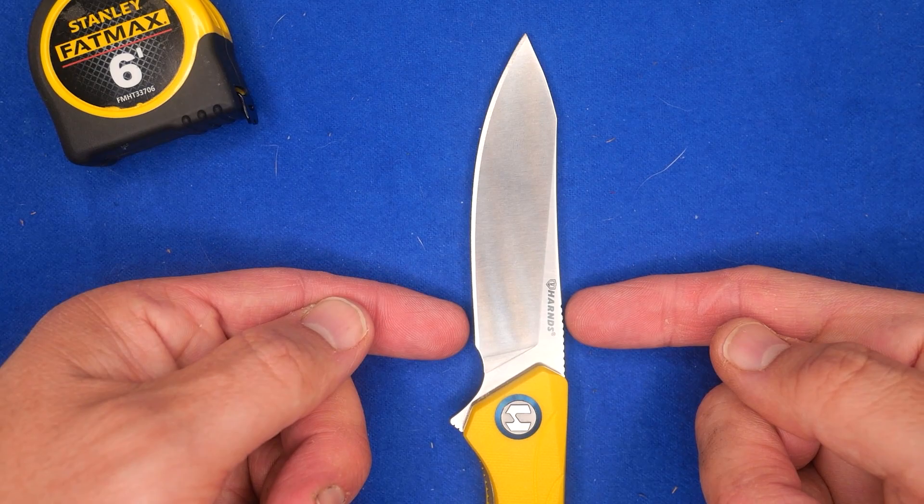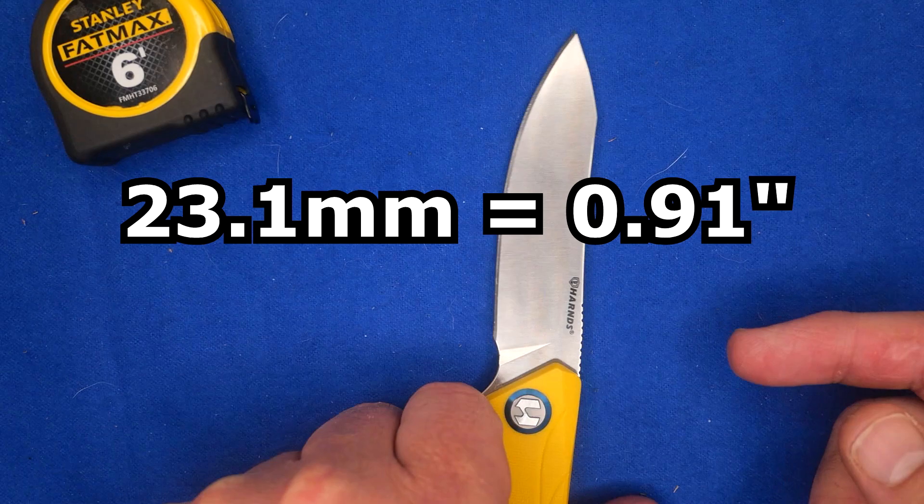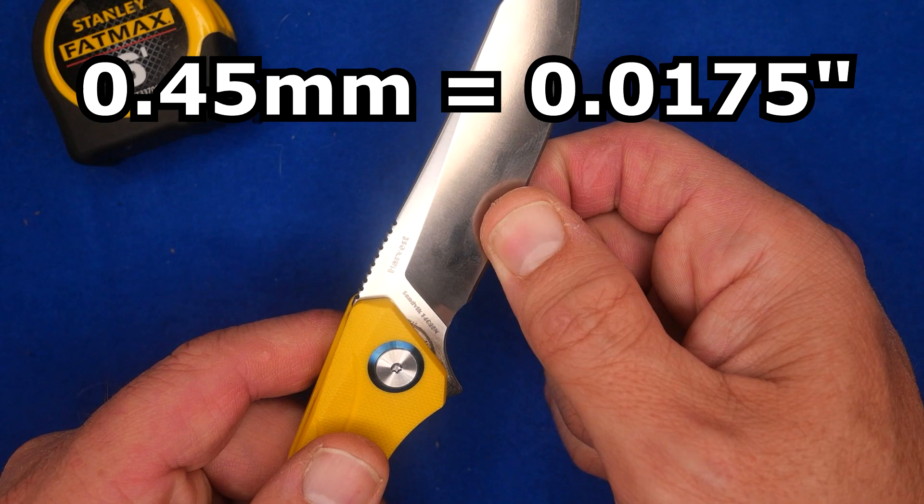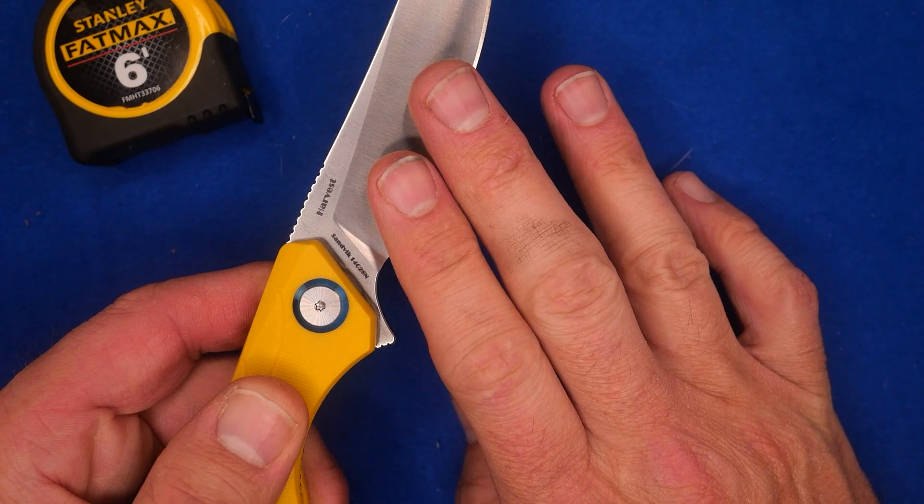How thin or thick is it behind the grind? 0.45 millimeters, 17 and a half thousandths of an inch. I like that. So you're going to sharpen this thing several times before you get up to 20 thou. So that's why I like knives to be under 20 thou. This isn't bad.